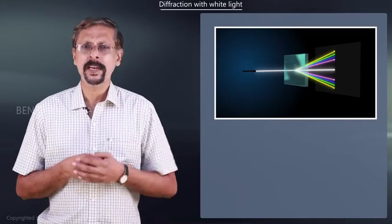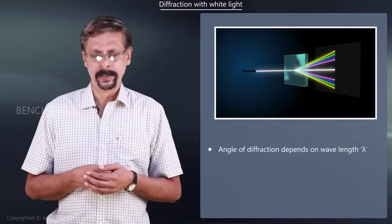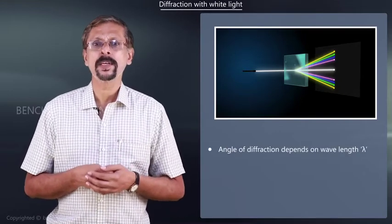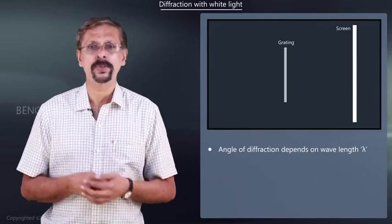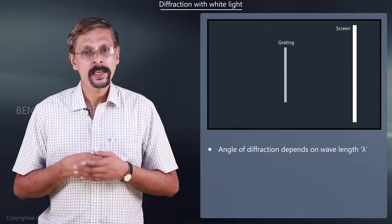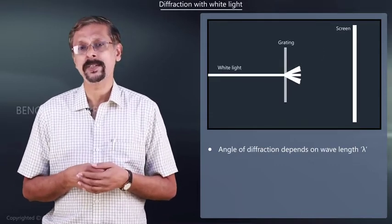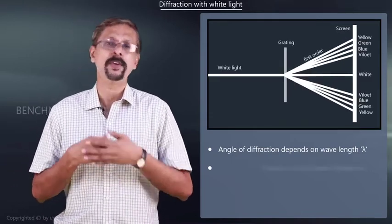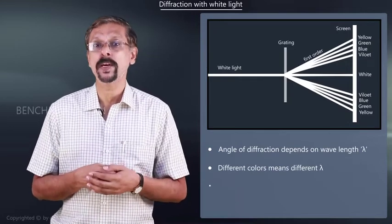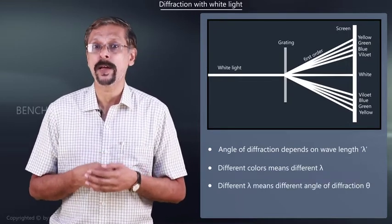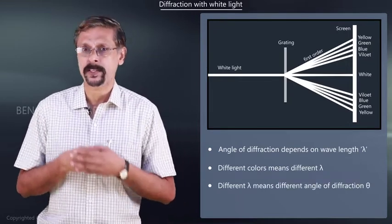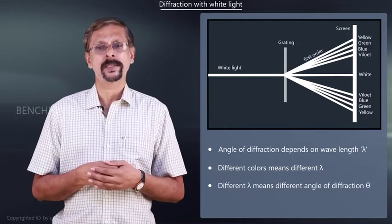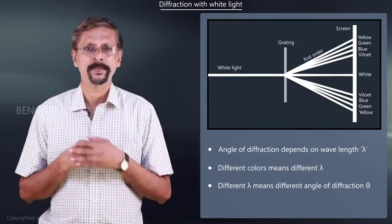It is clear that the angle of diffraction depends on the wavelength of light used. In white light there are different colors, meaning different wavelengths. So the different colors will have different values of diffraction — for different colors, the angle of diffraction will be different.